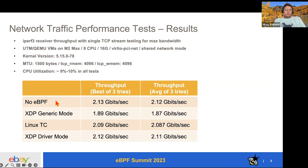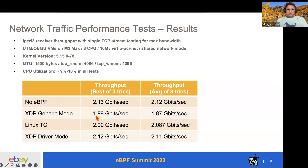Looking at the numbers: without any eBPF program attached, we get the best throughput at 2.13 Gbps best-of-three and 2.12 Gbps average. For XDP driver mode, we get 2.12 Gbps best and 2.11 Gbps average — a small cost from invoking the XDP program. Linux TC follows at 2.09 Gbps best and 2.087 Gbps average, which is very close. XDP generic mode has a more significant performance hit: 1.89 Gbps best-of-three and 1.87 Gbps average. This gap between Linux TC and XDP generic mode prompted us to profile the CPU to understand what's happening.